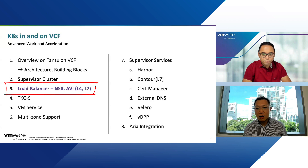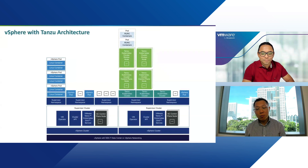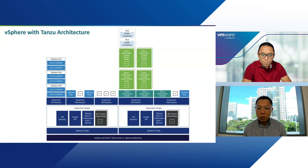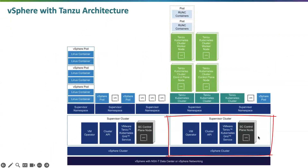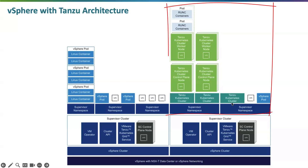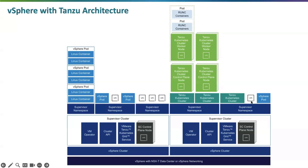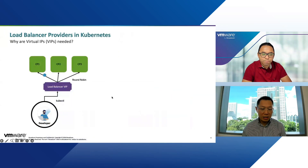We'll start with a recap of the vSphere with Tanzu architecture. The supervisor clusters we covered last episode comprise multiple control planes and you can create multiple namespaces. Each namespace can have a combination of TKCs, VMs, and vSphere pods. The reason we're talking about load balancers today is that you're going to have multiple replicas of control planes — whether in the supervisor clusters, TKCs, or VMs — and all of this requires a load balancer for high availability and traffic distribution.